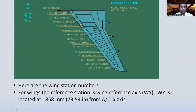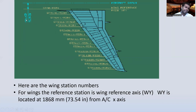Here are the wing station numbers. For wings, the reference station is the Wing Reference Axis (WY). The wing reference axis is located at 1,868 millimeters, or 73.54 inches, from the aircraft X-axis — that is 186.8 centimeters from the aircraft axis.